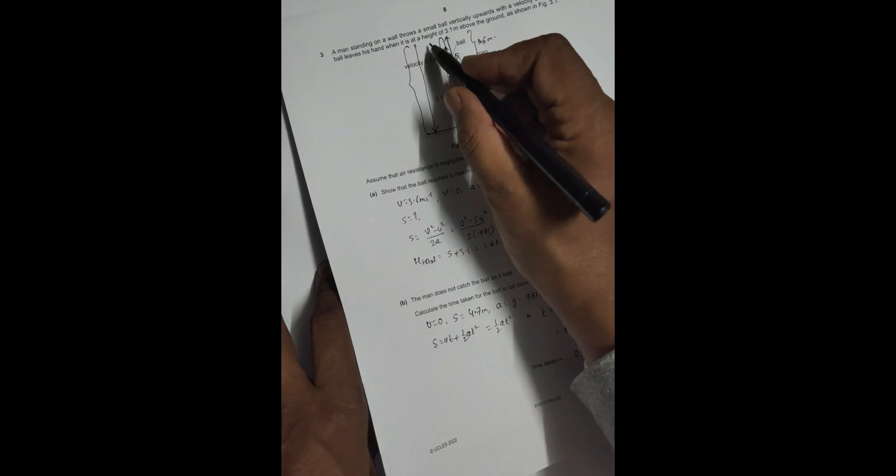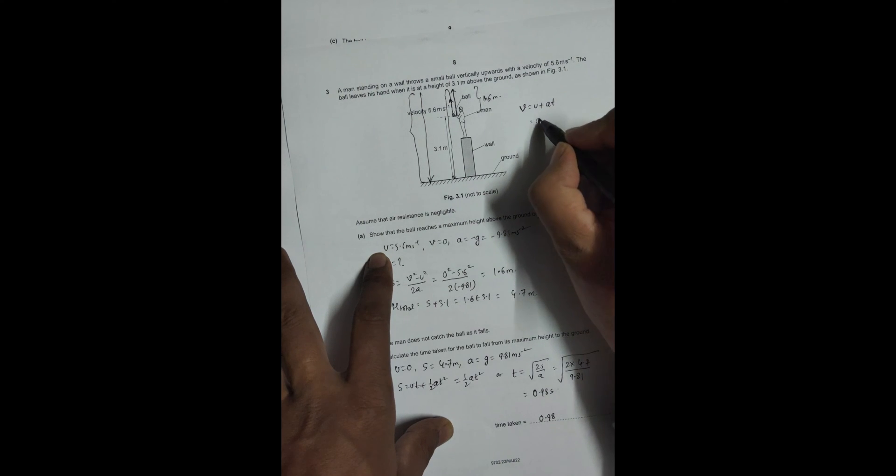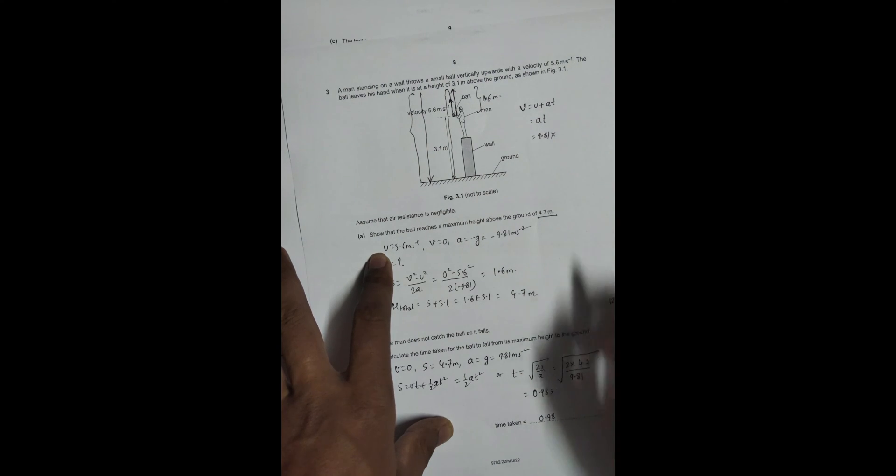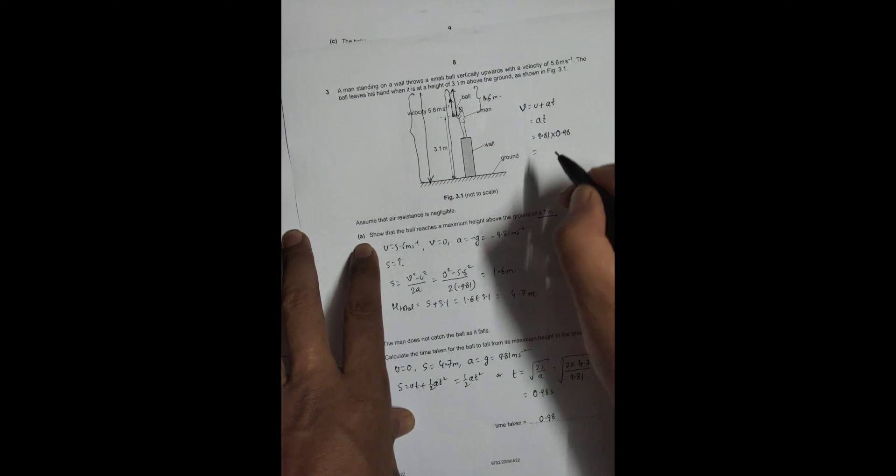v equals u plus at. u is 0, so it is simply equal to at. That's equal to a, which is 9.81, and time is 0.98, which we just got. So this gives me 9.81 times 0.98, which is equal to 9.6 meters per second.